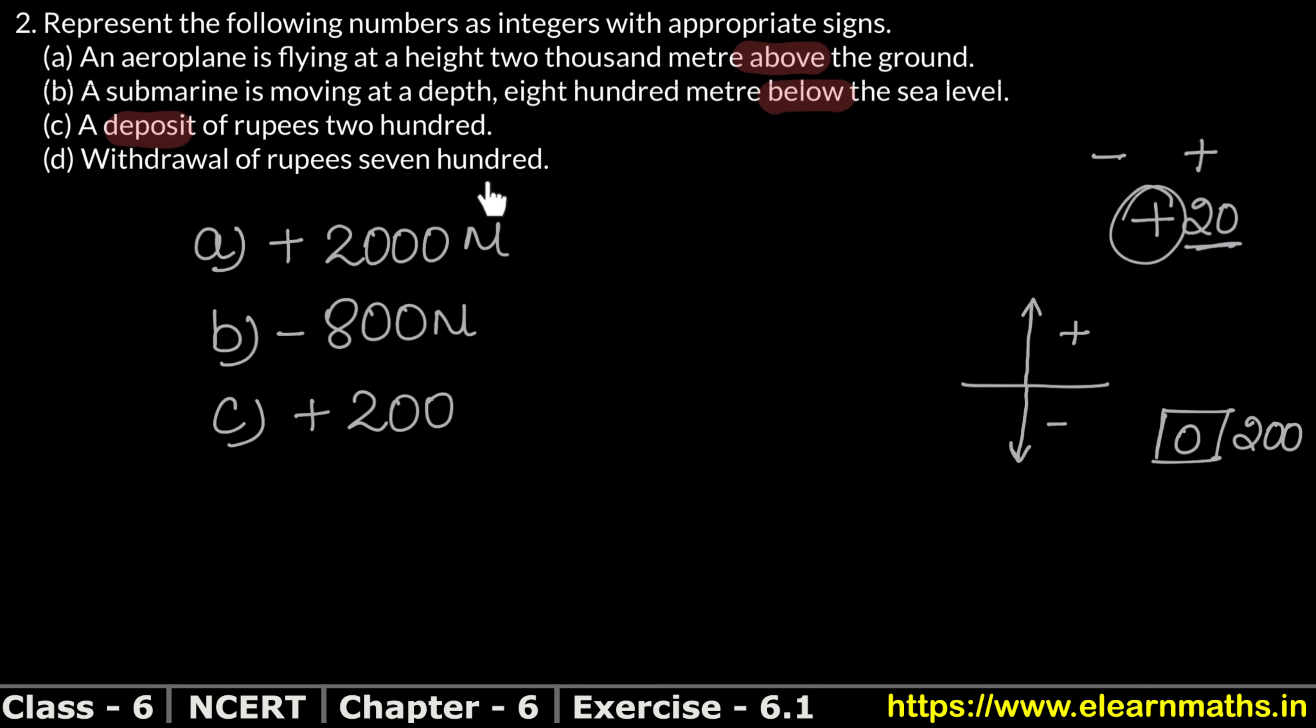Part D is withdrawal of rupees 700. Withdraw means to take out. Suppose I had 1000 rupees in my account and I withdrew 700 rupees. Then 300 rupees remain in my account. Again: there were 1000 rupees, I took out 700 rupees and spent them. So how many remain? 300.